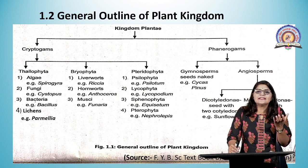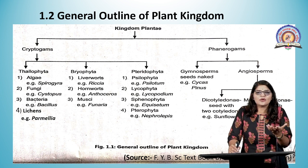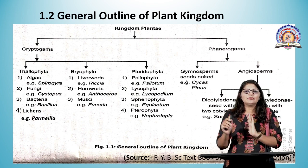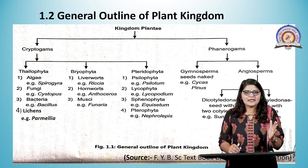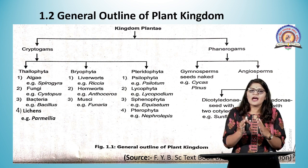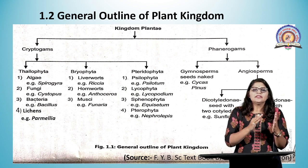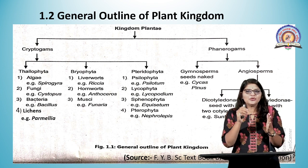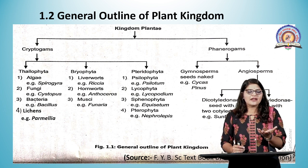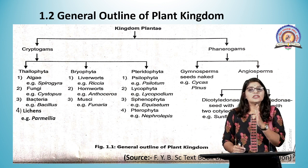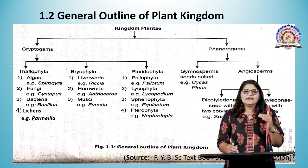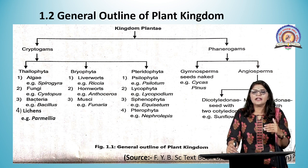The word 'cryptogames' comes from 'cryptos' meaning hidden, and 'gamus' meaning gametes — so the sex organs or gametes are hidden or embedded within the gametophyte. Phanerogames are specifically the flowering plants — flower and seed-bearing plants — while cryptogames are non-flowering plants that do not produce flowers or seeds. Instead, they reproduce with the help of spores. Cryptogames are further divided into three divisions: Thallophyta, Bryophyta, and Pteridophyta.